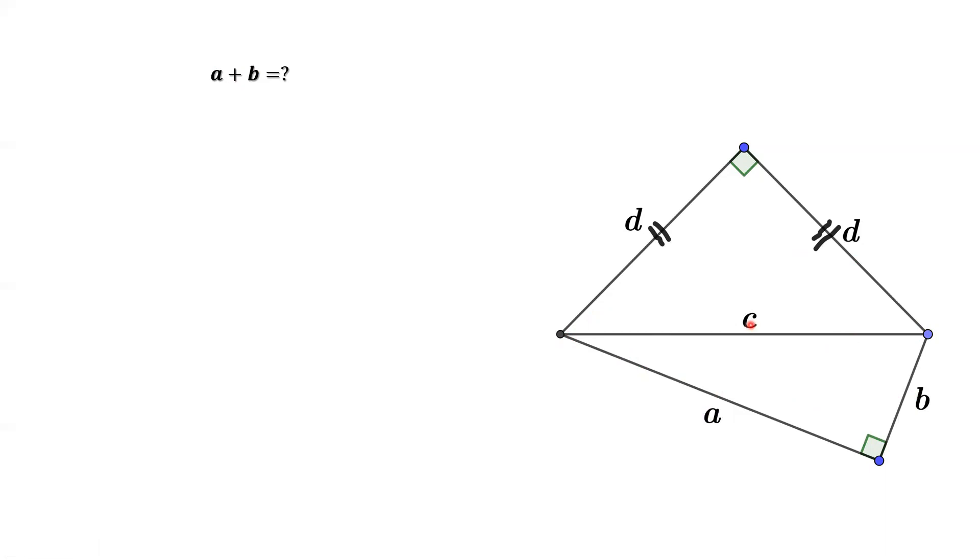This result is from the bottom triangle. From the top triangle, we have d² + d² = c². We use these two results to find out the answer.